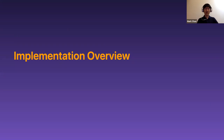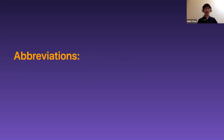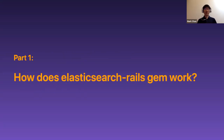Today's session will be split in two parts. The first part, I will be discussing how the Elasticsearch Rails gem works. Then I will discuss how GitLab uses it and why we use it differently. Since the word Elasticsearch is quite long and sometimes doesn't fit on a screen, I would abbreviate it from time to time.